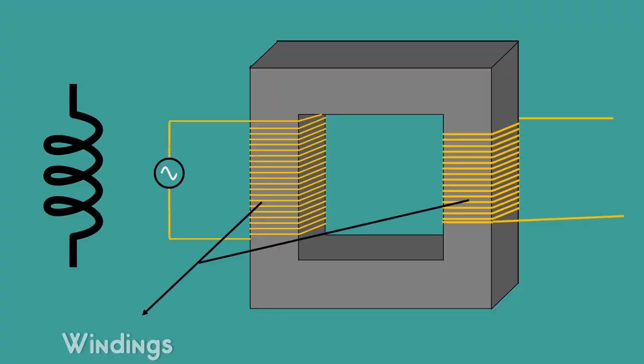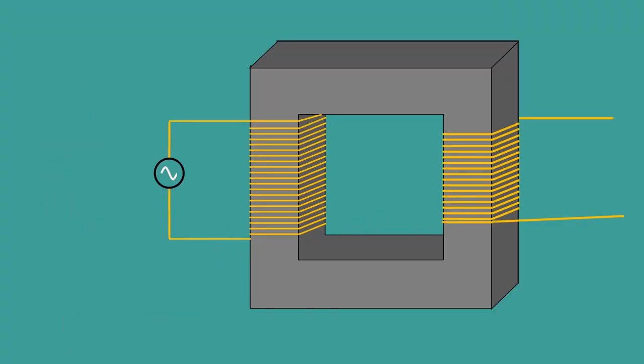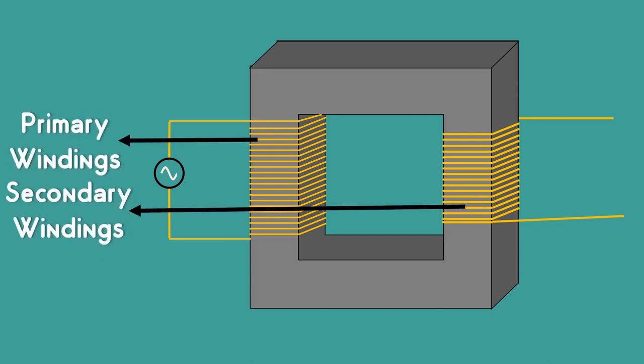In a transformer, this coil is also referred to as winding. The coil in the first circuit is called the primary winding and in the second circuit is called the secondary winding.